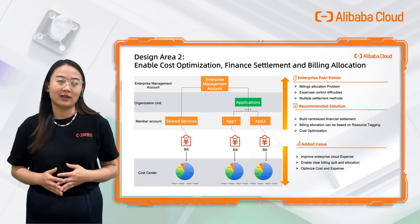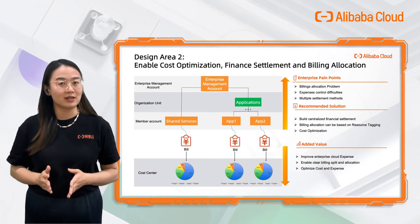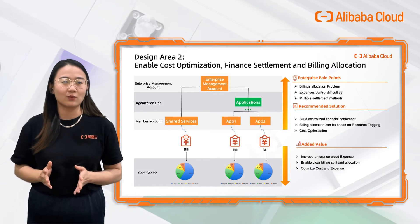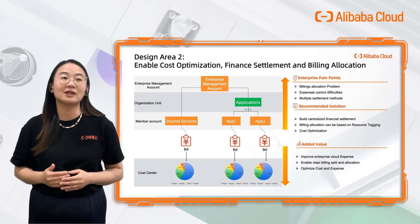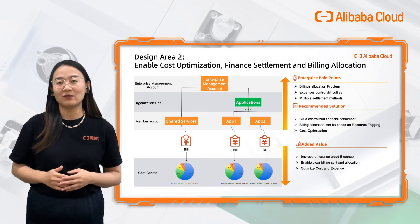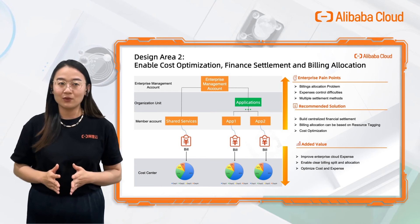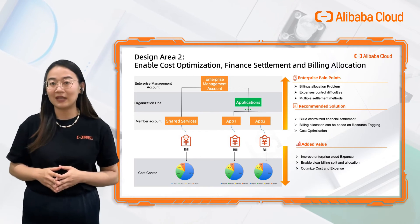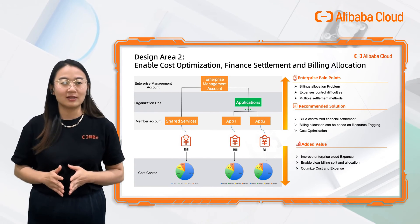The second design area focuses on finance settlement and billing allocation, as well as cost optimization. This always draws attention to every company because cost savings is one of the most important reasons for an organization to decide to migrate to cloud. The typical structure recommended is shown in the diagram — companies should leverage the Resource Directory product to build centralized finance settlement and separate bills for subsidiaries. In addition, using cloud tagging capabilities provided by Alibaba Cloud, companies can have better visibility on resource billing and detailed cost analysis.